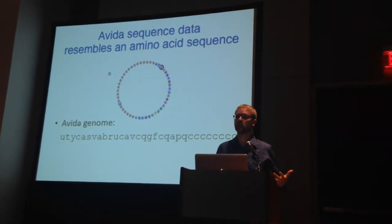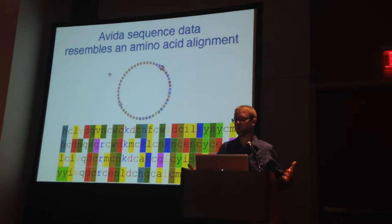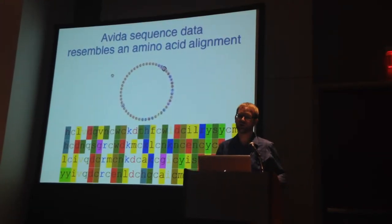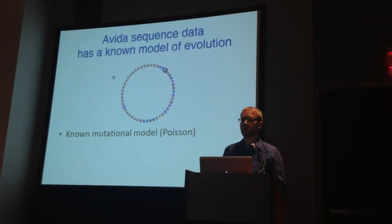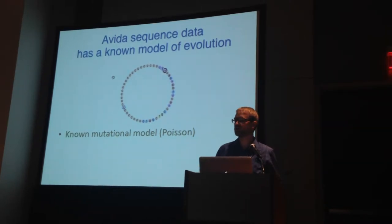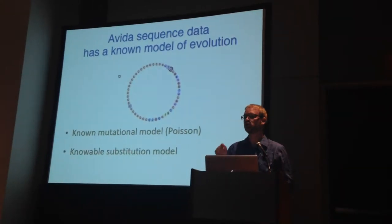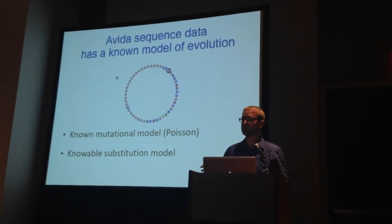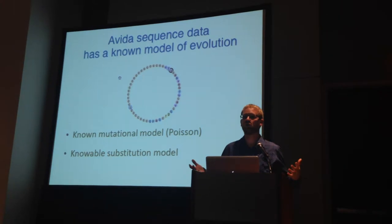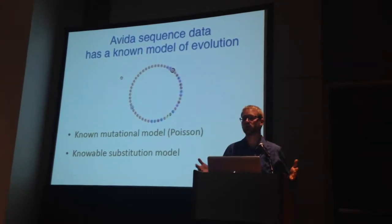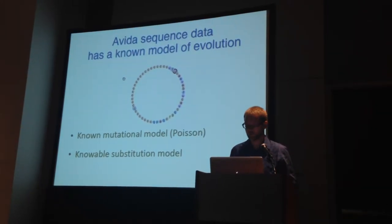AVIDA's sequence data resembles amino acid sequence data, characterized as single-letter abbreviations with 20 different characters, and it looks just like an amino acid alignment if you sample organisms from the same population or from multiple different populations. AVIDA also has a known model of evolution. Its actual mutational model is Poisson — a mutation from any one instruction to any other is equally likely to occur. It also has a knowable substitution model. The great thing about digital evolution and AVIDA specifically is that we have a perfect digital record of everything occurring within the system, including all of the genomes of all individuals in the population at each generation. Therefore, you can simply reconstitute what all those substitutions were and generate an actual substitution matrix from them.